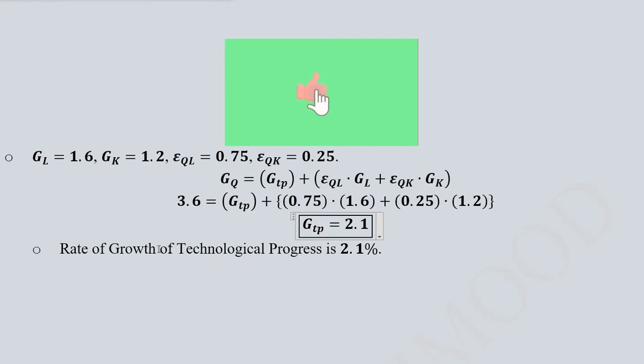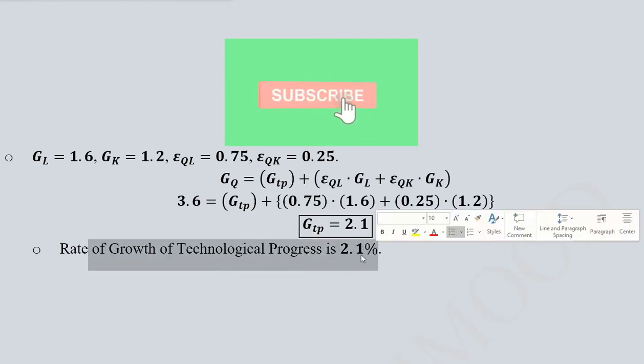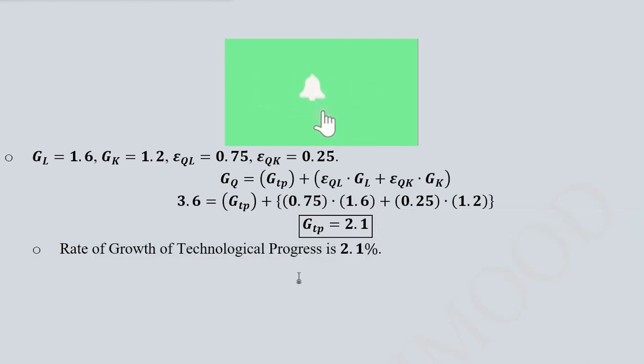So this is the answer. This is actually the growth rate of technological progress, which is 2.1 percent. So we are able to find out the growth rate of technological progress, which is definitely something very crucial in these days.